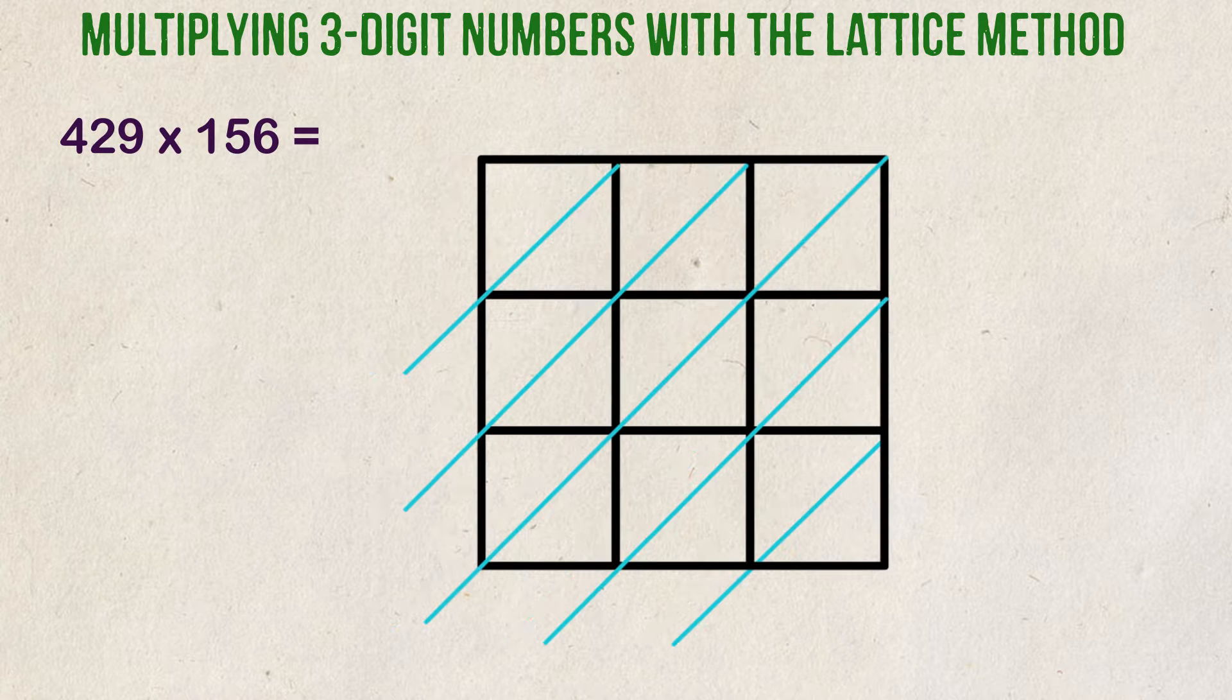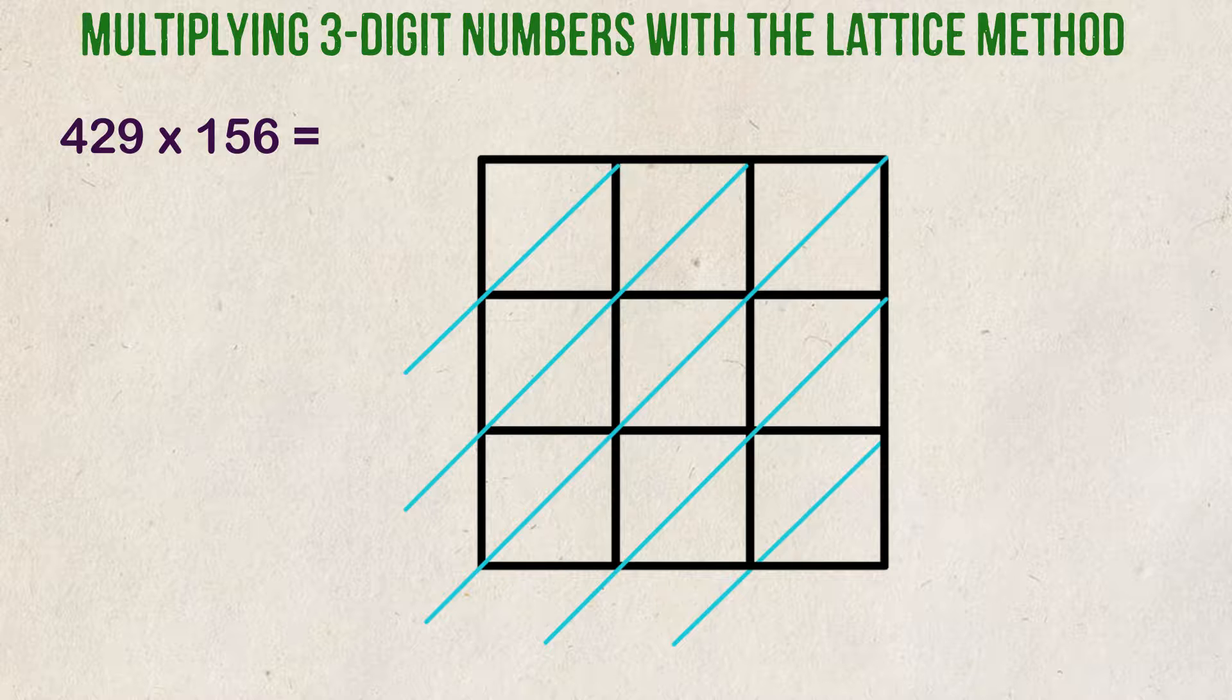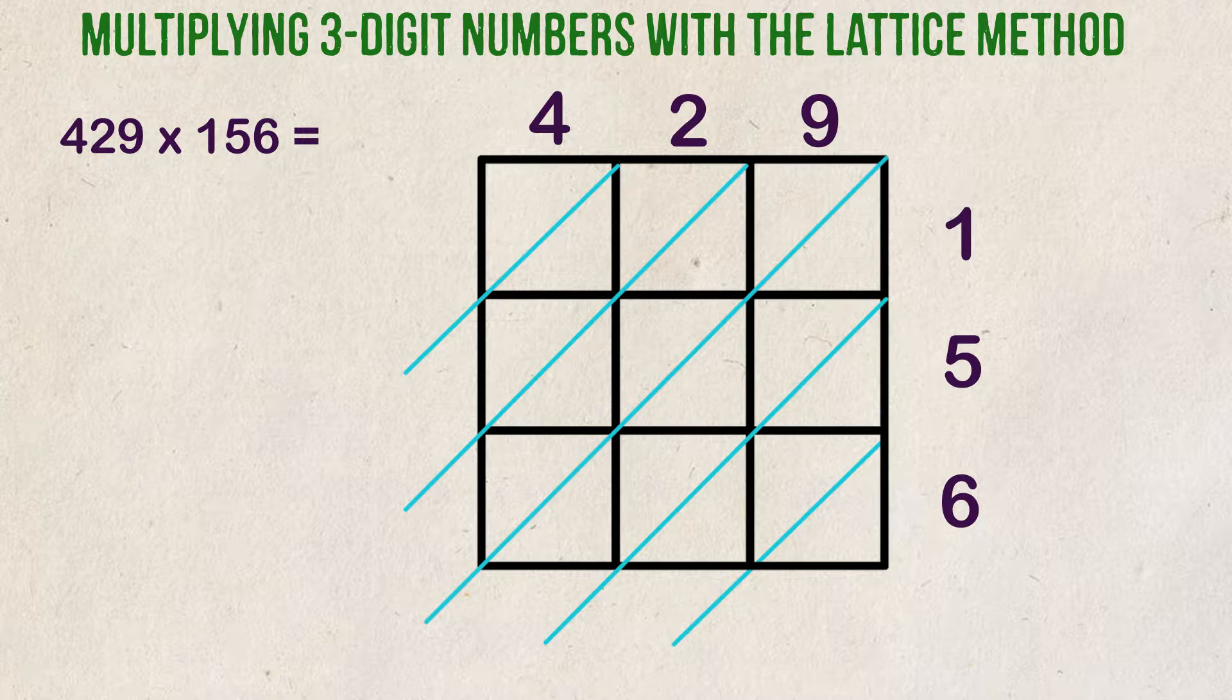Example two. What is 429 times 156? This problem will have three boxes across and three rows down. We set up our boxes and diagonal lines and drop our numbers up top and along the sides.